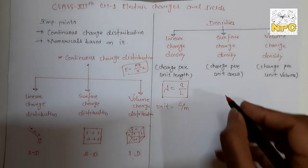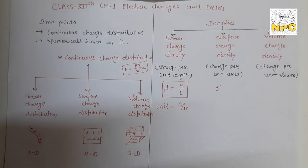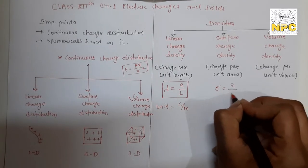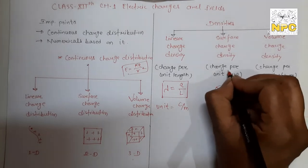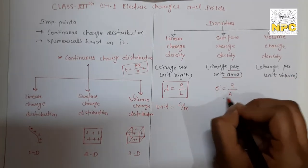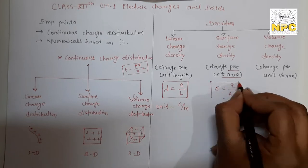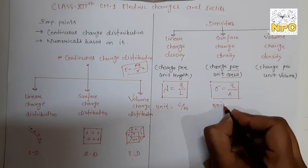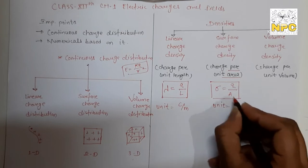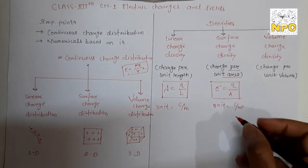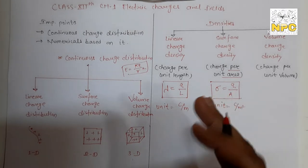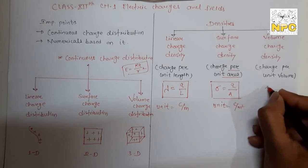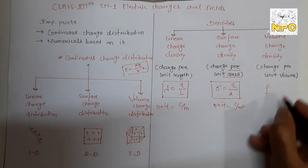Surface charge density is denoted by sigma (σ) and equals total charge divided by area: σ = Q/A. Since it is charge per unit area, the unit is coulombs per meter squared (C/m²), because the unit of area is m² (length × breadth).